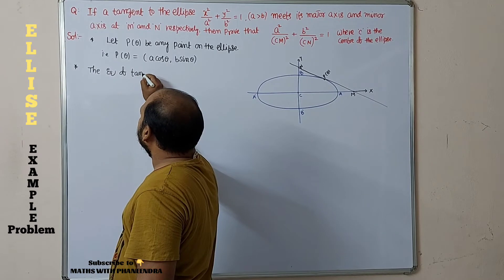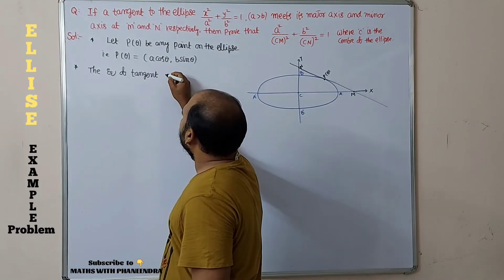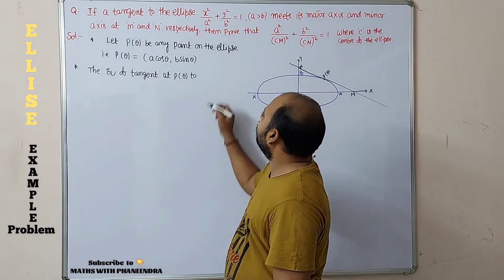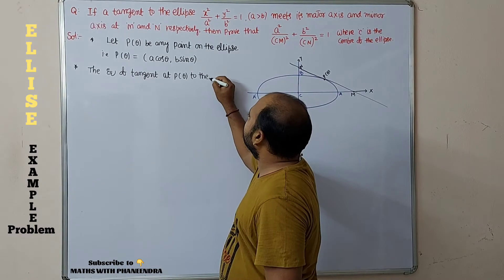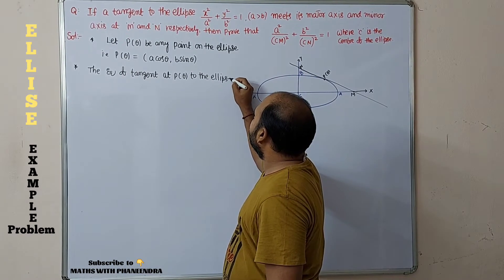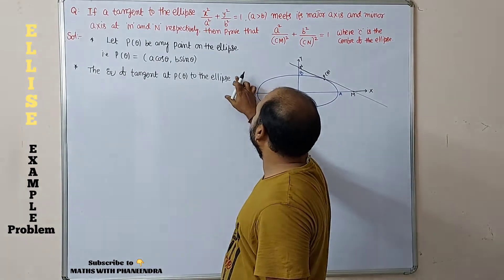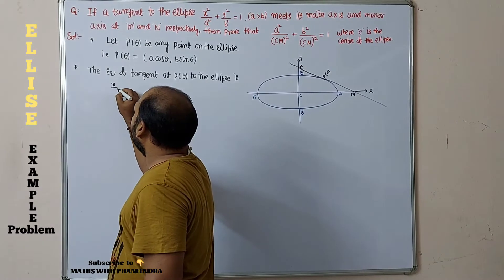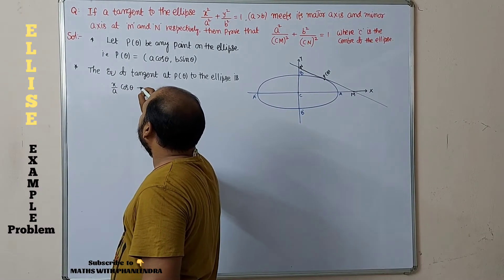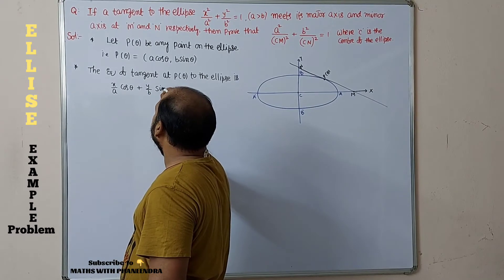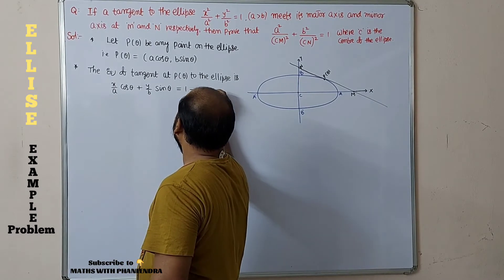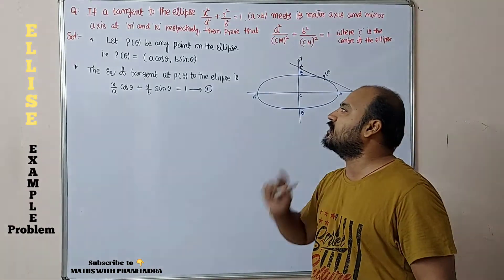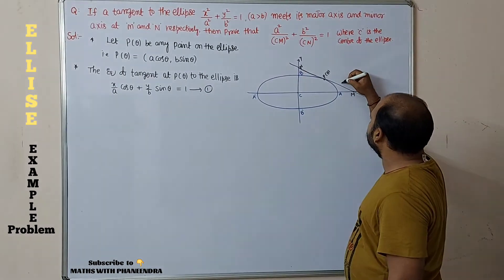The equation of tangent at P(θ) to the ellipse is: x/(a cosθ) + y/(b sinθ) = 1. This is equation number 1 — the equation of tangent at P(θ) to the ellipse.